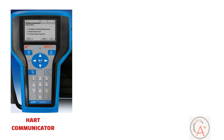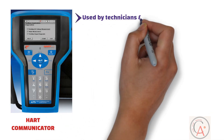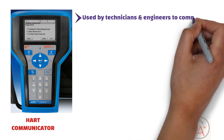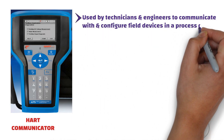The second tool is the HART communicator. HART, which stands for Highway Addressable Remote Transducer, is a communication protocol used in process automation. A HART communicator, often referred to as a HART handheld communicator, is a device used by technicians and engineers to communicate with and configure field devices in a process control system.